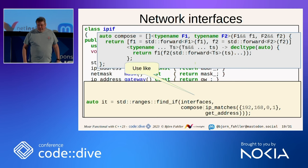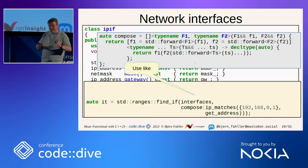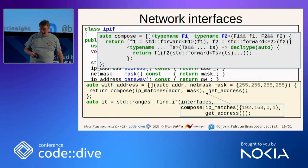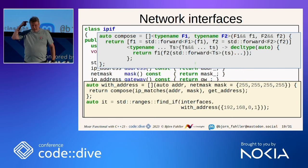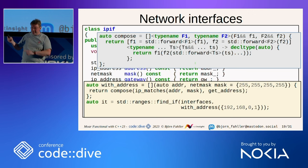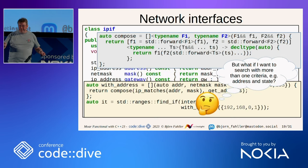So now we can write: `ranges::find_if(interfaces, compose(ip_matches(this_ip_address), get_address))`. That is cool. But we can do one better — we can give that composition a name, because this will occur in several places in our code base. So we have `with_address(address, mask)` which returns this composition. Now I can write: `find_if(interfaces, with_address(192.168.0.1))`. This is beautiful code. But what if I want to search for more than one criterion?